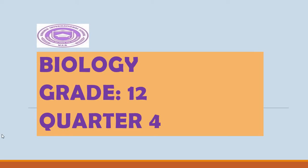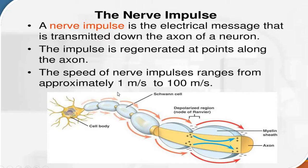Good morning. Today we are going to continue our lesson about the neurons. We talked about their structure, and now we are going to understand how nerve impulses are transferred. First, what is the nerve impulse? A nerve impulse is the electrical message that is transmitted down the axon of the neuron. The impulse is generated at points along the axon.